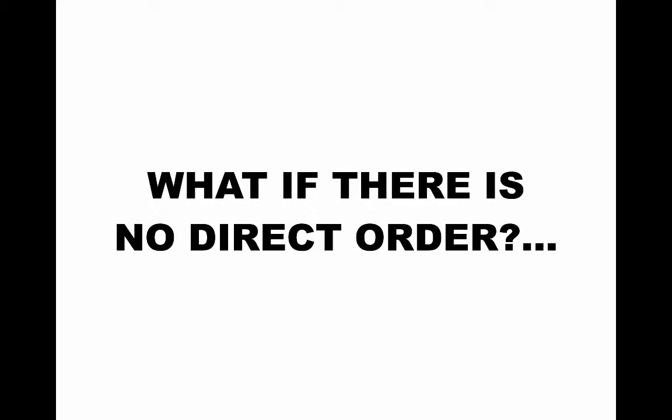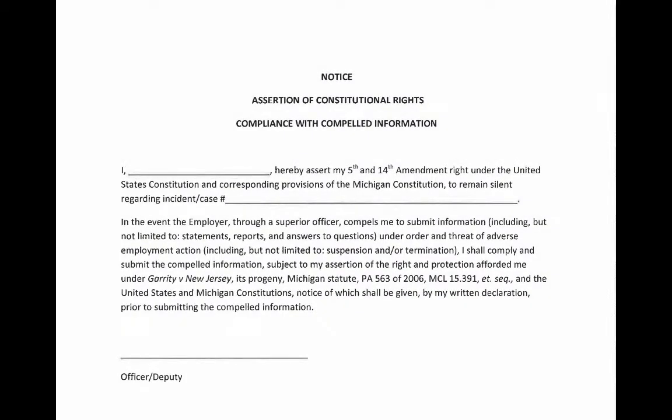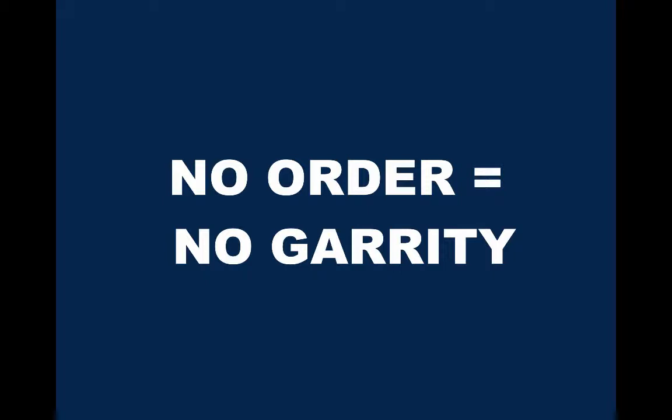If there's no direct order, the POAM does have a form which can be used — it's an assertion of constitutional rights. The form is available on POAM.net or can be obtained from your business agent or the on-call attorney. Basically, the form provides that the individual will invoke his right to remain silent, and that if he does receive a specific order from the department — and violation of that order would result in an employment sanction — he will provide a full and truthful statement regarding the incident. If you do not have an order, no Garrity protection will attach.